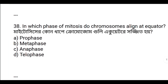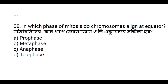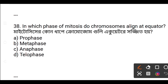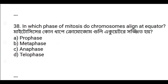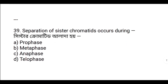Question 38: In which phase of mitosis do chromosomes align at the equator? The answer is metaphase — in metaphase, chromosomes align at the equator and are attached to spindle fibers. Option 2 is the correct answer.